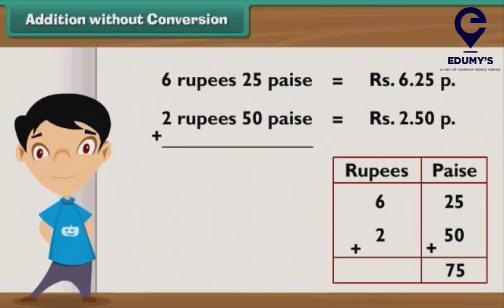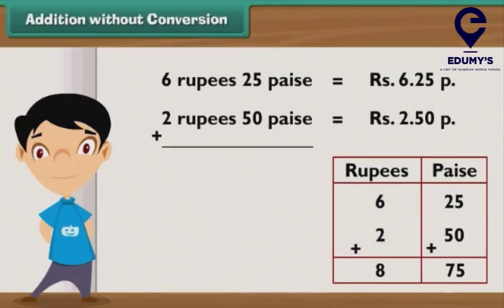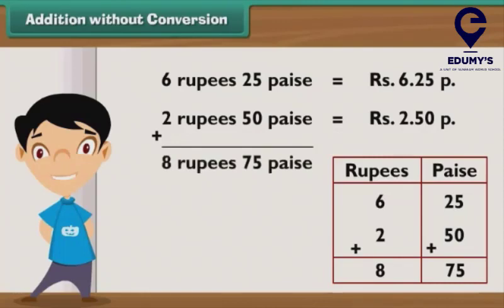Step 2: Add the numbers in the rupees column. 6 plus 2 is equal to 8. Write 8 in the rupees column. The result of the addition is 8 rupees 75 paisae.